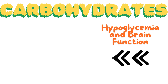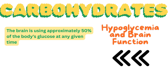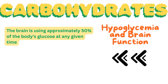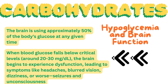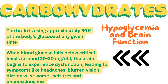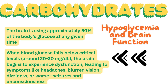The brain is highly dependent on glucose, using approximately 50% of the body's glucose at any given time. When blood glucose falls below critical levels — around 20–30 mg per deciliter — the brain begins to experience dysfunction, leading to symptoms like headaches, blurred vision, dizziness, or worse, seizures and unconsciousness.